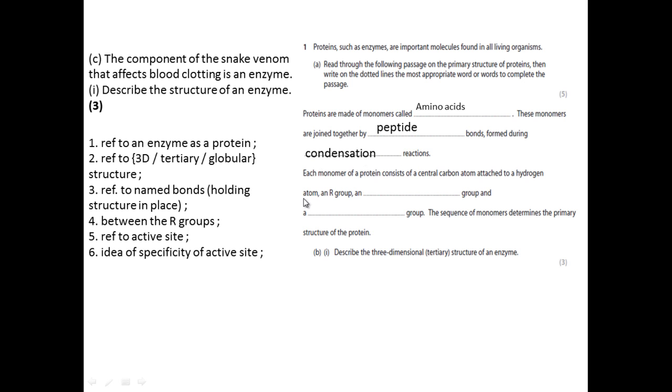Each monomer of a protein consists of a central carbon atom attached to a hydrogen atom, an R group, an amine group, and a carboxyl group. Amine and carboxyl can be reversed there.